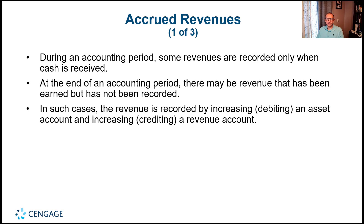Let's continue our discussion about chapter 3, which talks about the adjusting process. We'll see different scenarios where we'll need adjusting entries. We'll start with accrued revenues. In adjusting entries we have two types of terms: accrued and deferred. The word accrued translates to unpaid, and the word deferred translates to prepaid. So whenever you see accrued revenue, it means unpaid revenue.